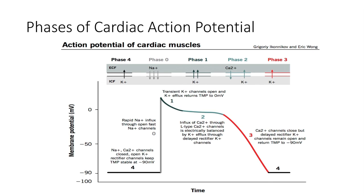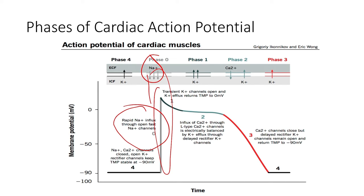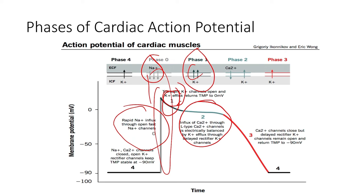Phase zero: we have a rapid influx due to the sodium channels opening, allowing sodium to enter the cell. The membrane potential becomes less negative, moves toward zero — we have an upward spike in the transmembrane potential. Phase one: the potassium channels begin to open; they open slower than sodium channels everywhere in the body, so there's a little delay. They start effluxing — leaving the cell. We had that slight dip at the end of phase zero into phase one. At phase two, the sodium channels are closed, the calcium channels are still open, the potassium channels are still open. We have a balance of charges — calcium moving in is balanced by potassium moving out. We have our plateau.